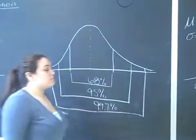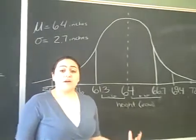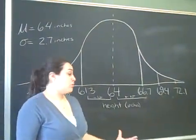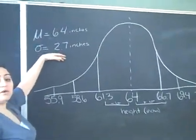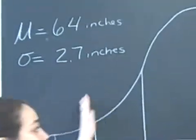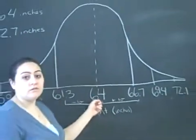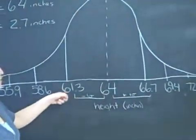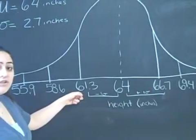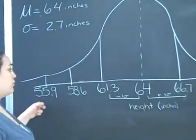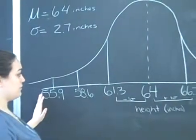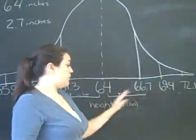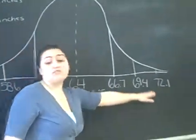To apply this rule, let's say that we gather data about the heights of all the women in our school. We determined that the mean was 64 inches and the standard deviation is 2.7. To set up our graph, we put the mean in the middle and subtract one standard deviation value each time we go down, remembering that there are three standard deviations away from the mean. Likewise, on the other side, we add 2.7 to each step, creating a number line.